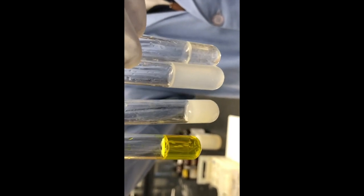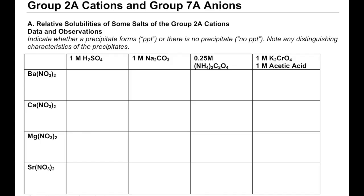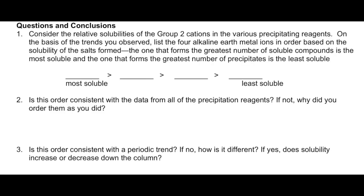Comparing all the strontium ions from top to bottom: strontium ion with sulfate on top, followed by carbonate, then oxalate, and finally with chromate. Take a moment to fill out the table and answer the questions at the end of this section. We will notice that each cation has a specific number of precipitates from most soluble to least soluble, and we will check if this trend follows the periodic table.